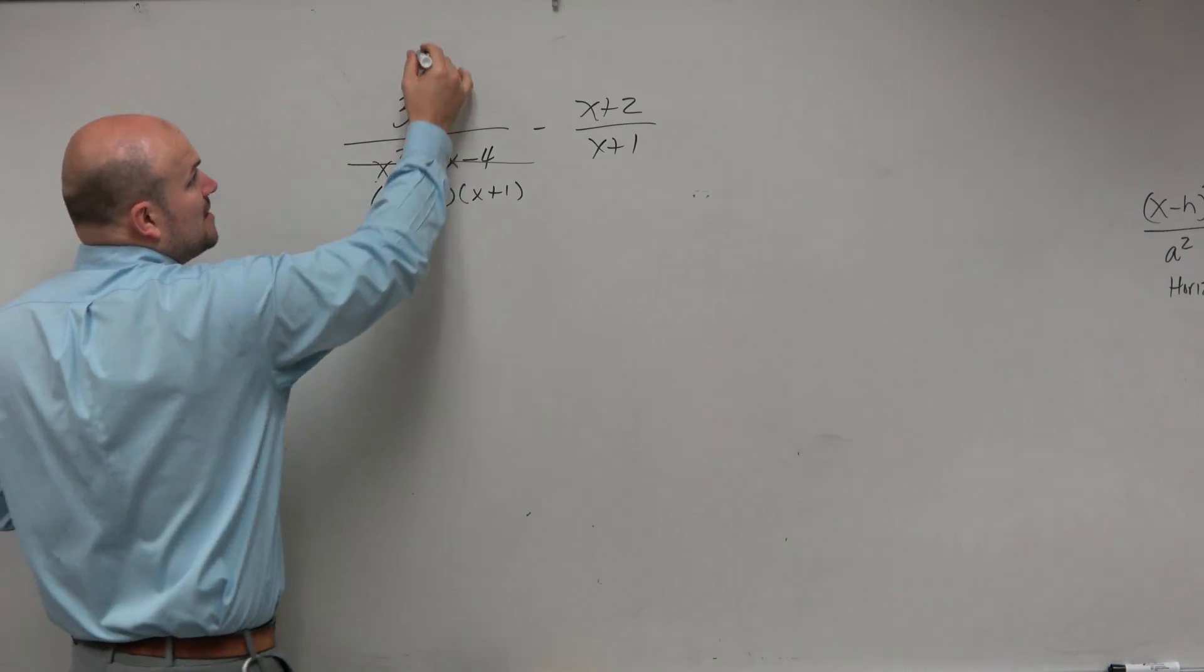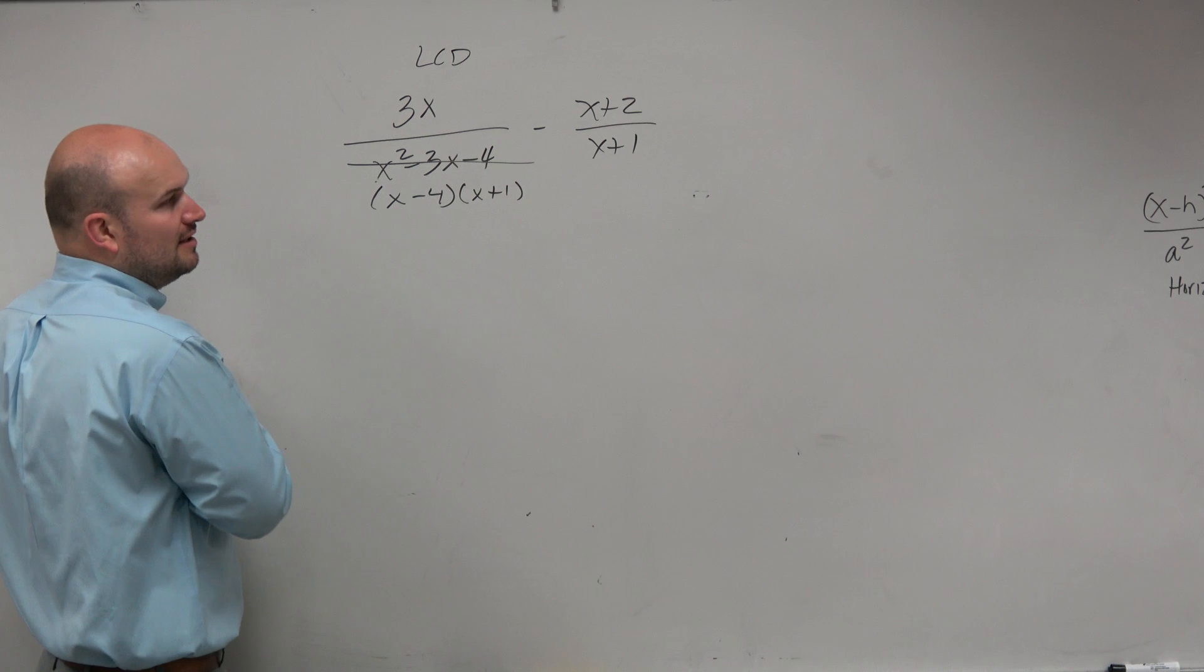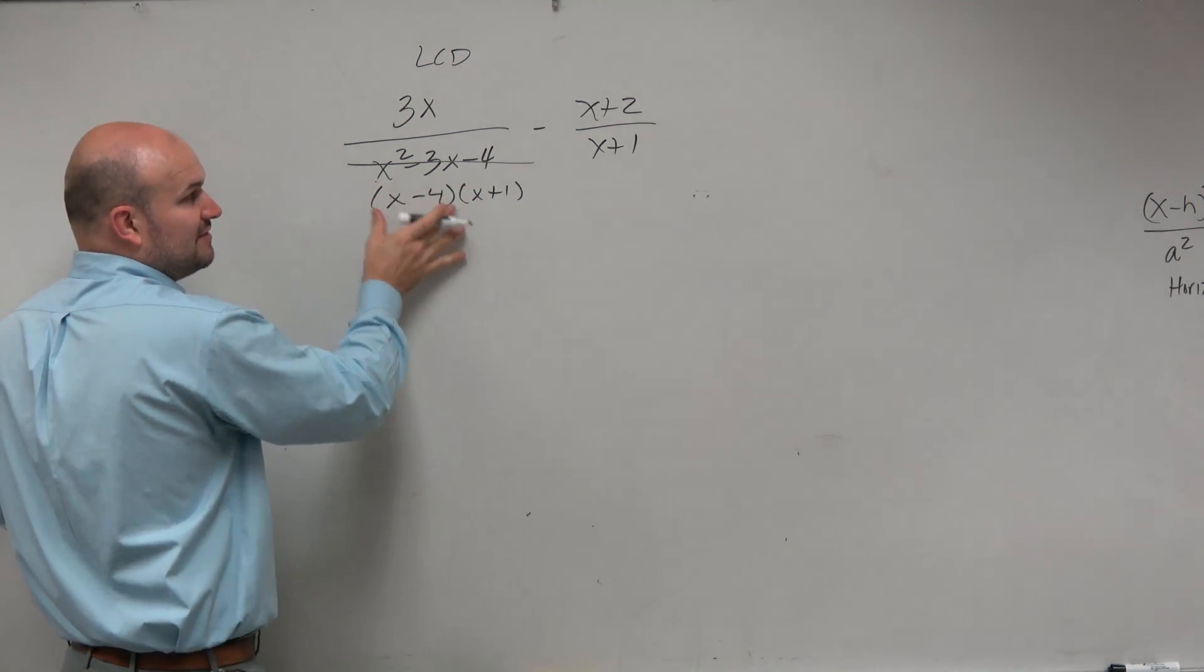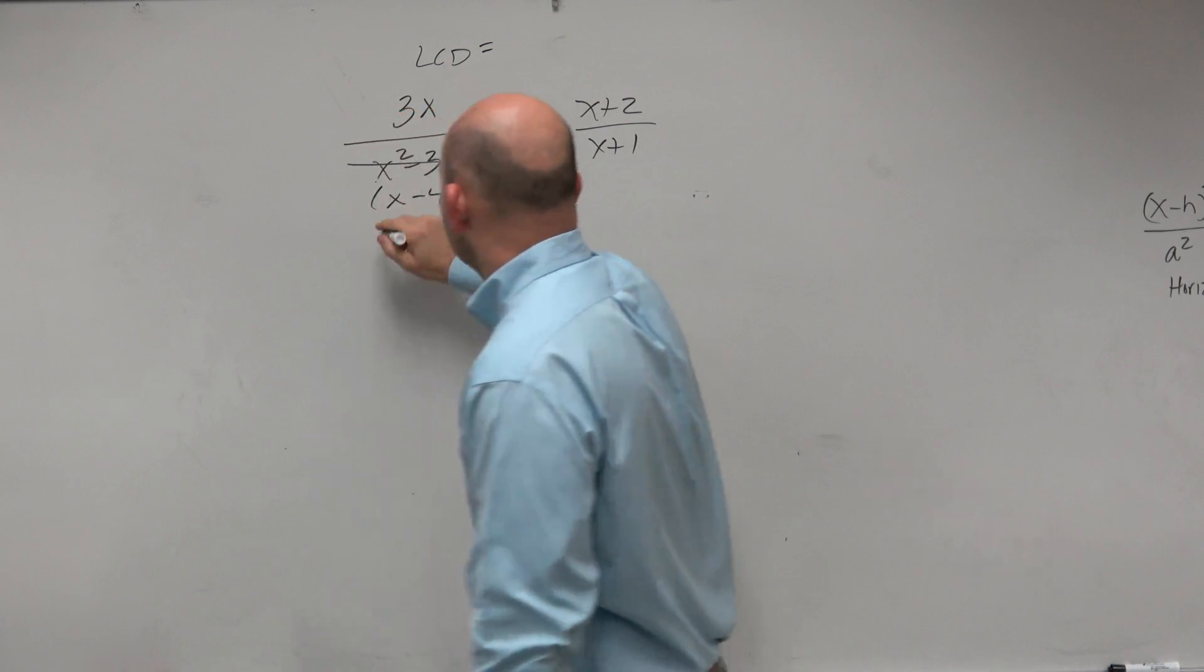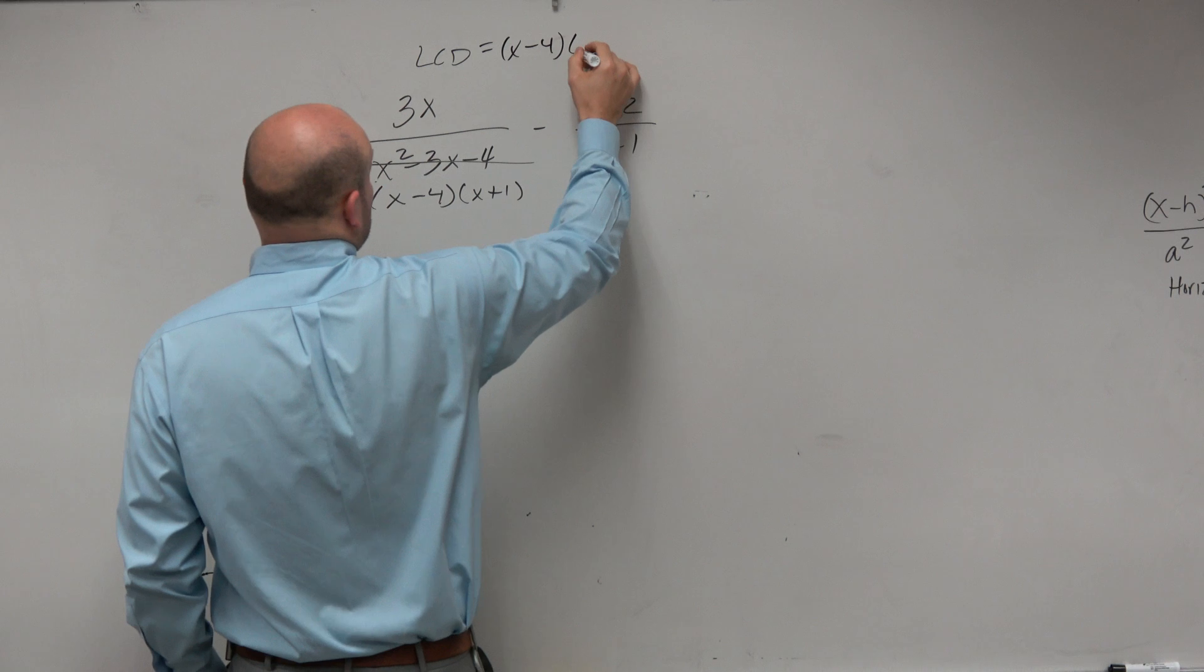In this case, it is useful, because to find my LCD, I don't want to do what I did in the last problem. I don't want to multiply this times that, because they already share an x plus 1. So the only thing I need to add for them to have a common denominator is this is my common denominator, x minus 4 times x plus 1.